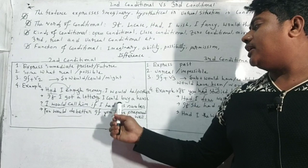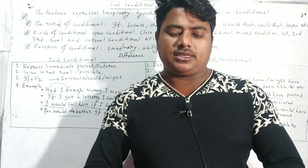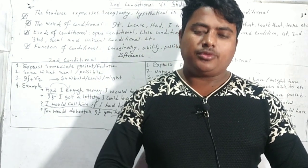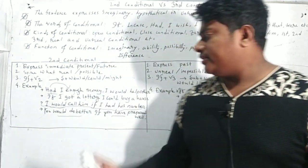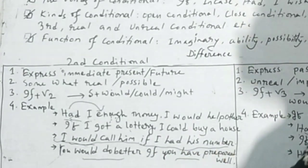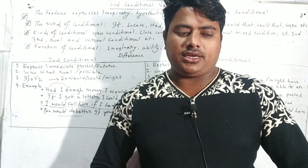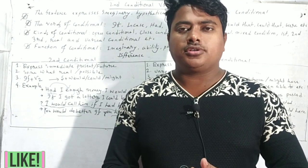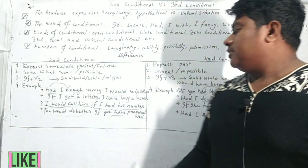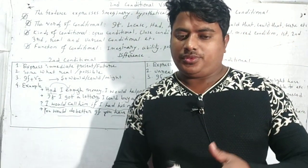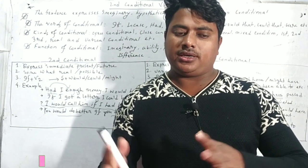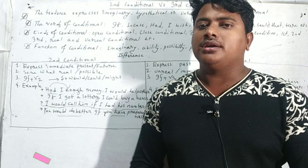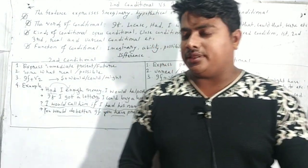Then another example. If I got a lottery, I could buy a house. In second conditional, all sentences will not be real. In most cases, it is unreal. Here the second sentence expresses, if I got a lottery, it is totally uncertain thing. Either I got lottery or not, I could buy a house. Actually, my buying house is dependent on getting lottery. So it is uncertain thing.